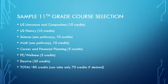Here's a sample 11th grade course selection: U.S. Literature and Composition for 10 credits, U.S. History for 10 credits, Science for 10 credits — again, refer back to those pathways. Math for 10 credits as well, again referring back to those pathways.